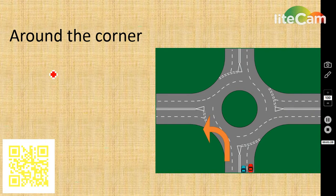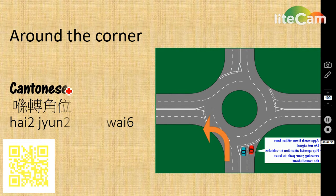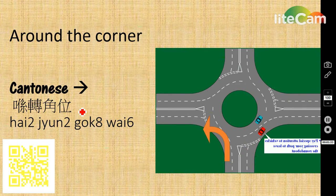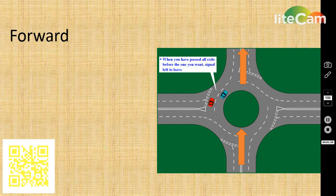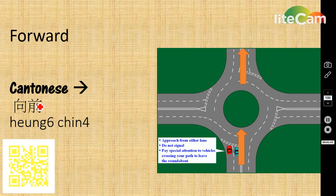Around the corner is 起轉角位. Forward is 向前.